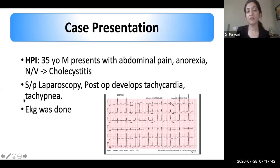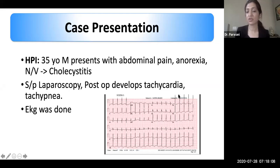Case one: a 35-year-old male presented with abdominal pain, anorexia, nausea, and vomiting. He had a diagnosis of cholecystitis and underwent surgery. Postoperatively, he developed tachycardia and tachypnea, and an EKG was done. For a 35-year-old male, the EKG showed extensive ST depressions from V3 to V6, increased QRS voltage, Q waves in the inferior leads, and ST changes in the lateral pattern — a quite abnormal EKG for a patient without any known history of hypertension.